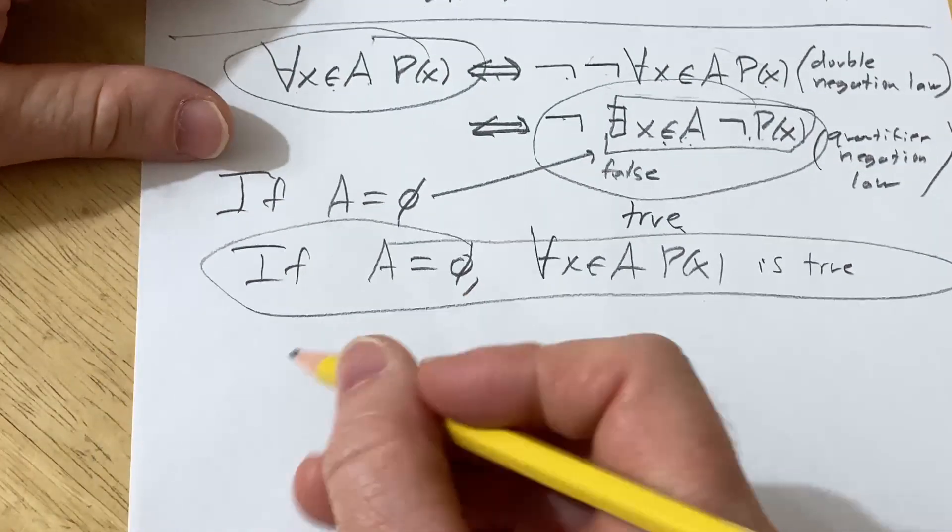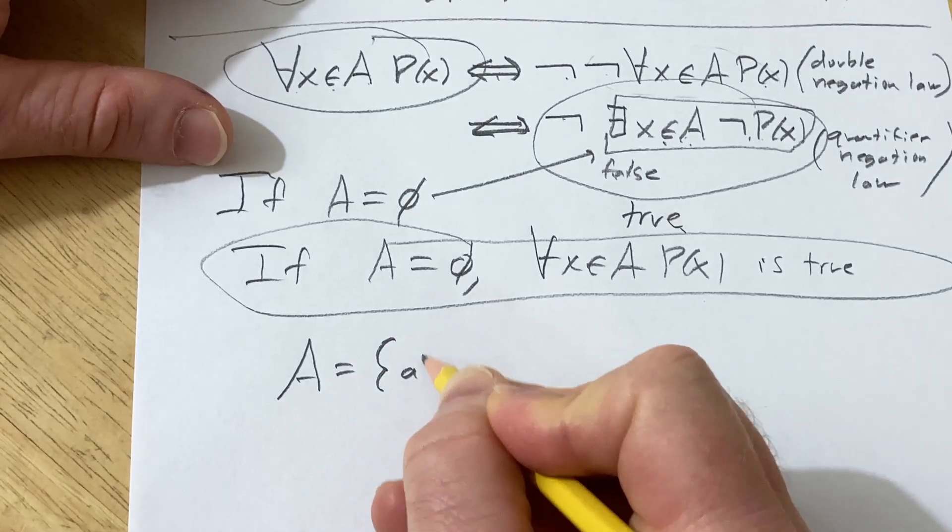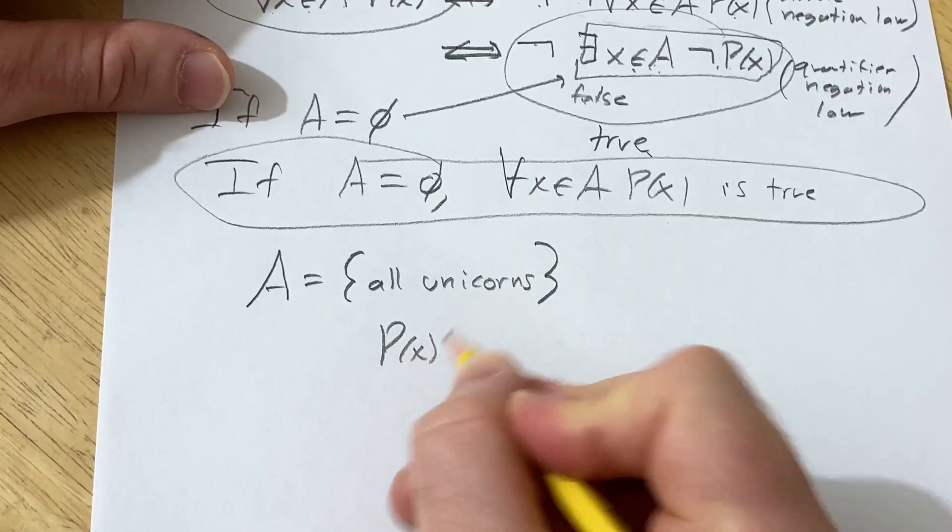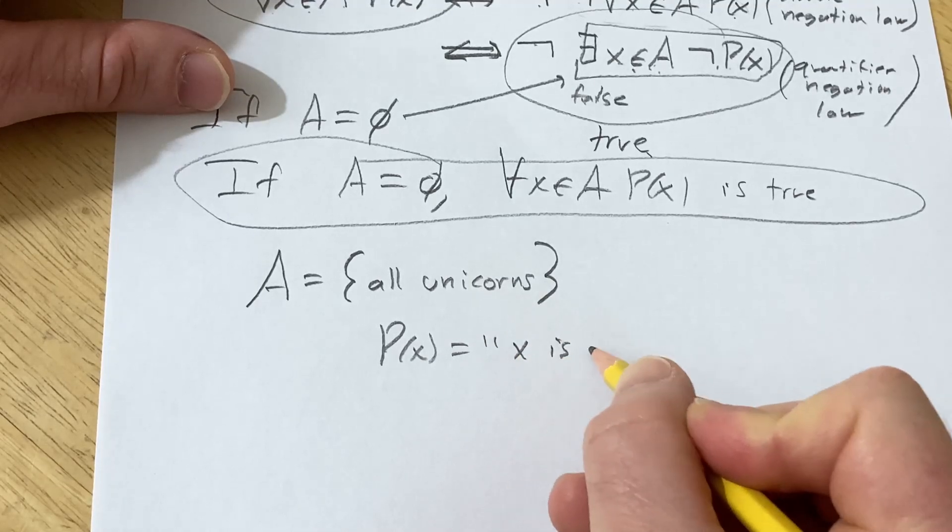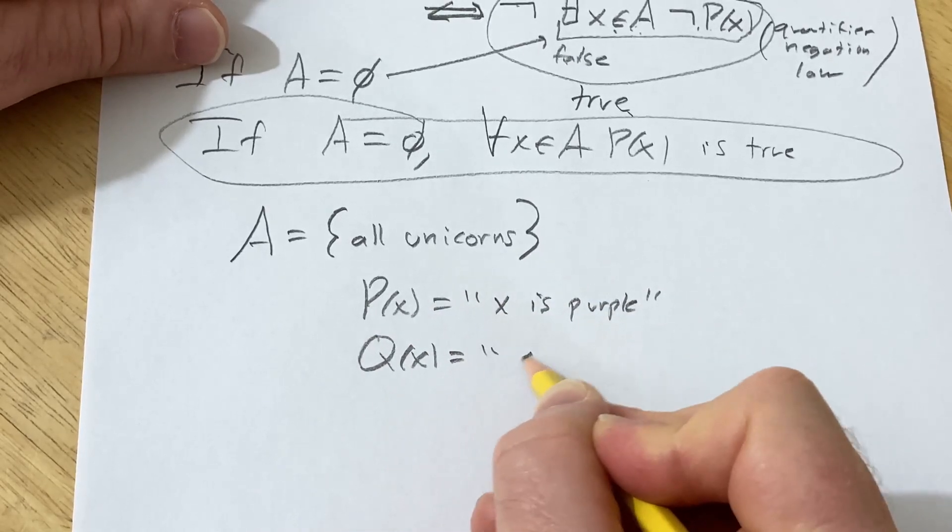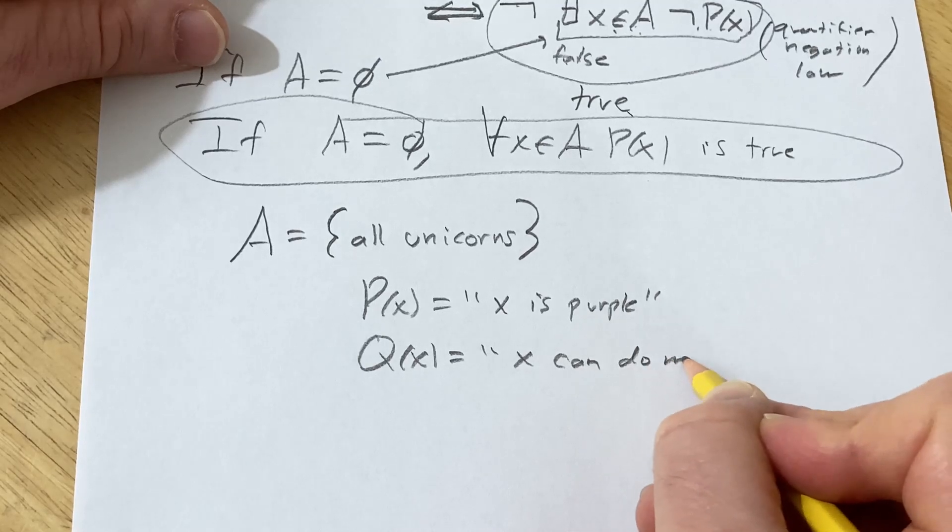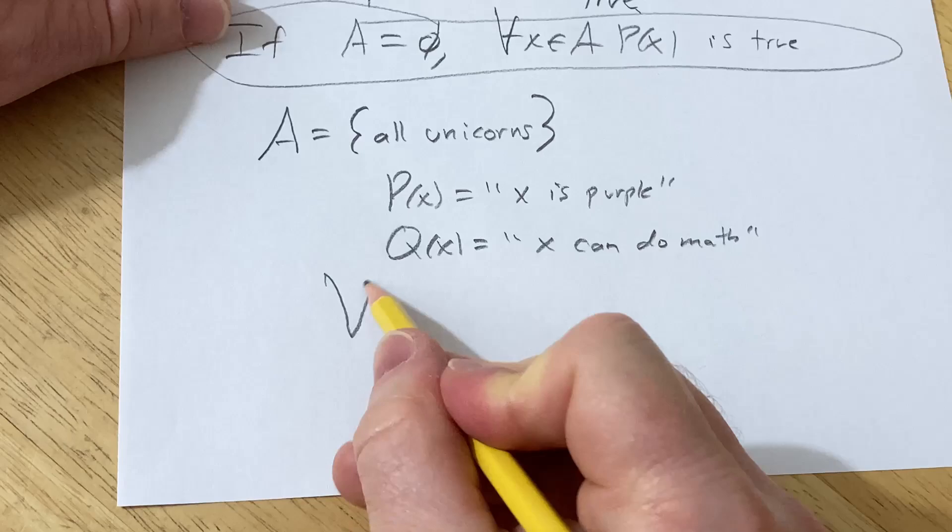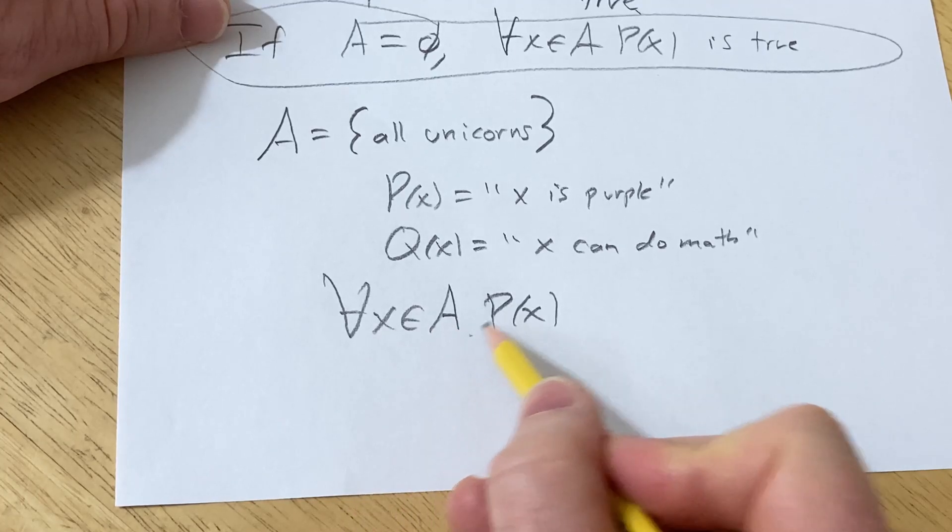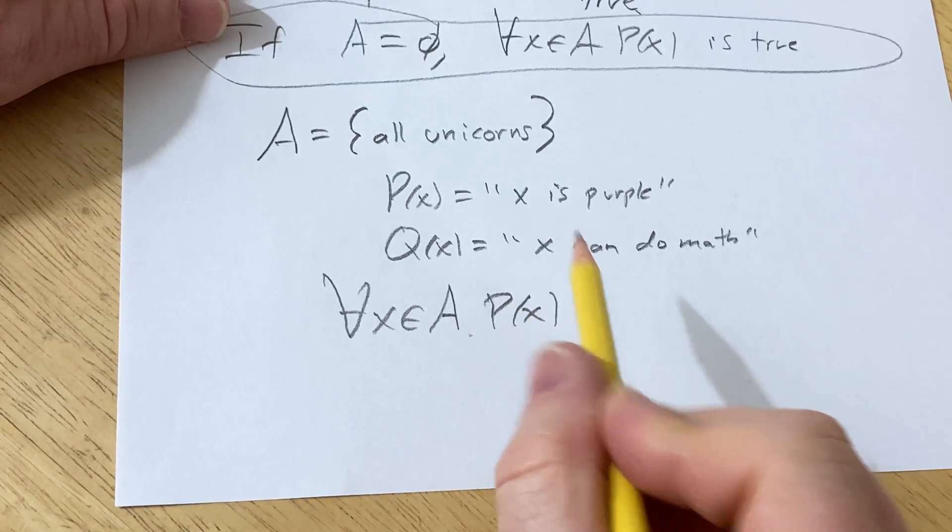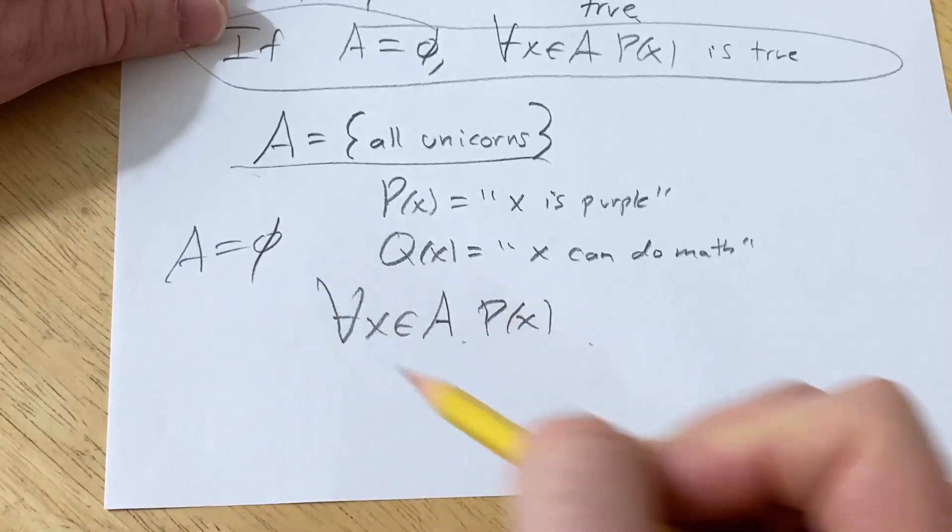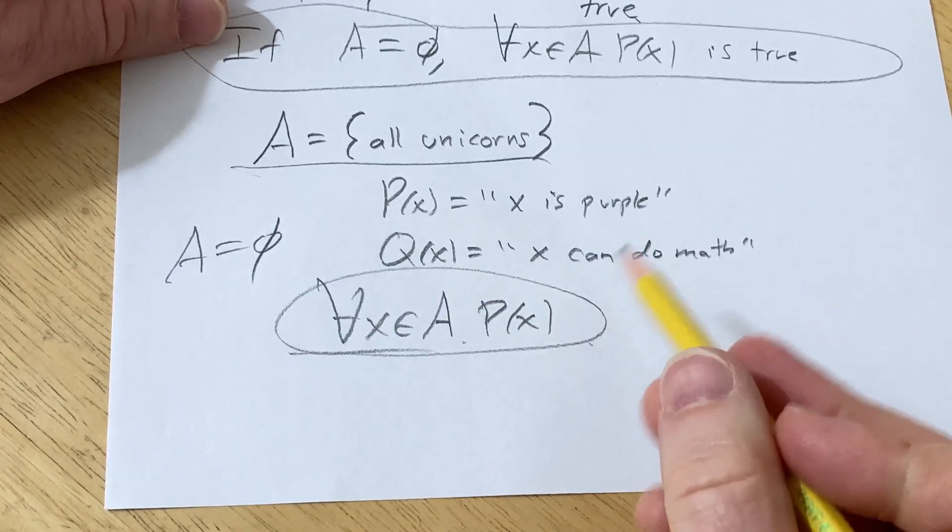So for example, if I let A be the set of all unicorns. And I let P(X) be the statement, X is purple. And just for fun, we'll do Q(X). X can do math. Then if we look at the statement for all X in A, P(X), this is saying that all unicorns are purple. But is this statement true? And why is it true? Well, it's pretty simple. There are no unicorns. Unicorns don't exist. So A is equal to the empty set. Therefore, all unicorns are purple.